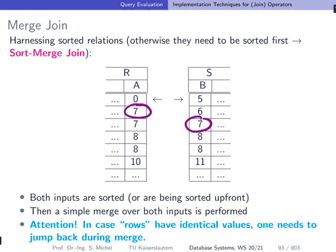Then again you advance the smallest pointer, or the pointer pointing to the smallest of the two. You advance here to seven.